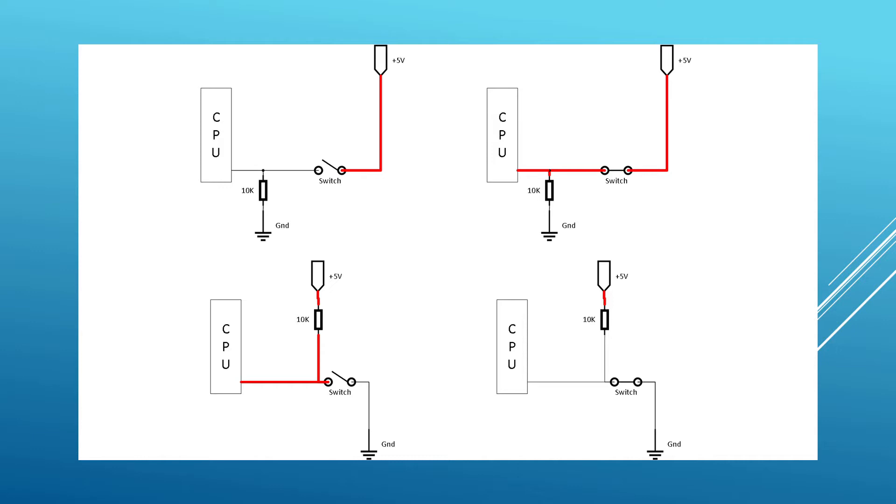In the top left, we have a switch tied to 5 volts and a CPU signal line tied to ground through a resistor to keep the signal from floating. When the switch is closed, 5 volts is now connected to the CPU input pin. The CPU can then take action on this event.